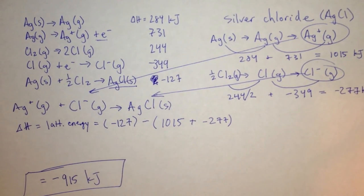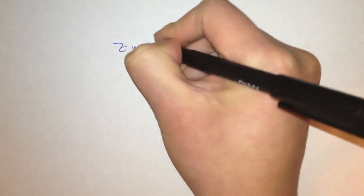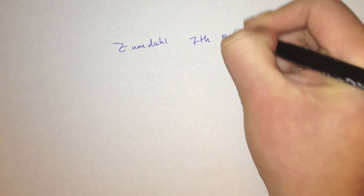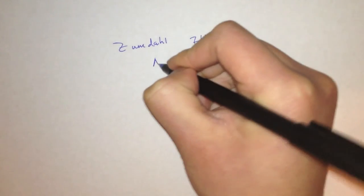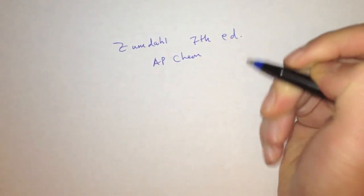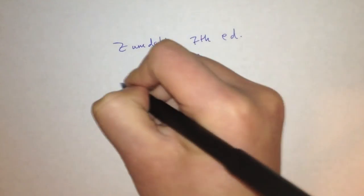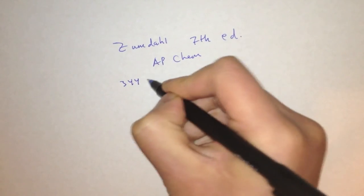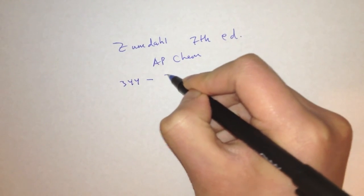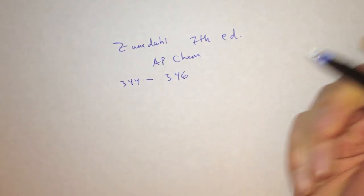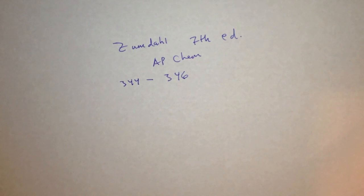I hope you've learned a lot by watching this video. If you feel like you haven't learned enough, you can go over this again in the Zumdahl 7th Edition AP Chemistry book, beginning on page 344 and ending on about page 346. This is part of the Bonding General Concepts chapter, which is chapter 8. I'll see you in the next video.